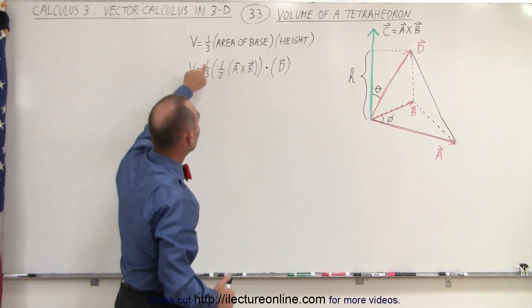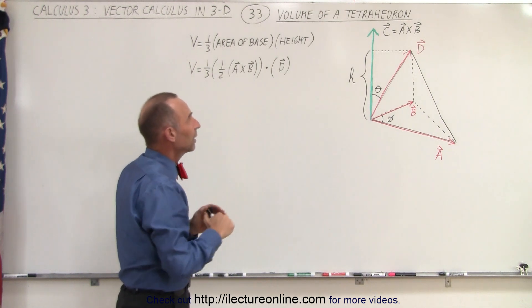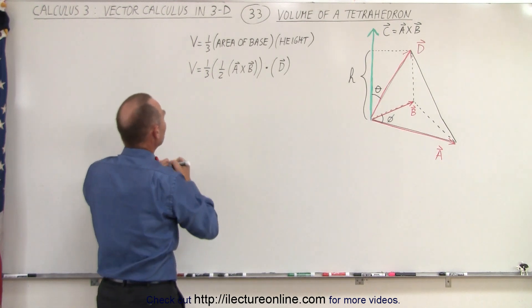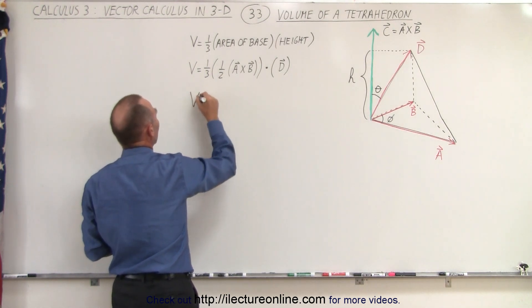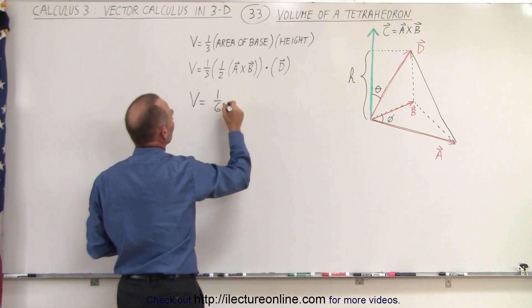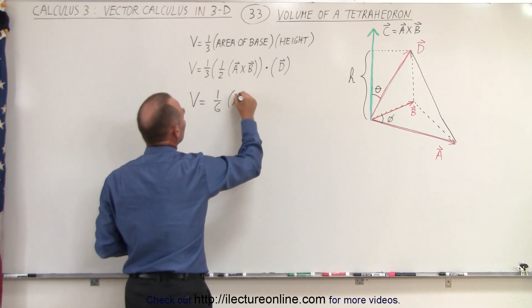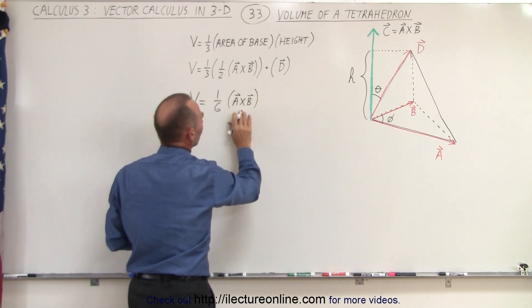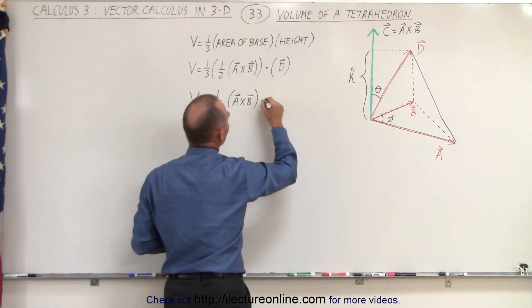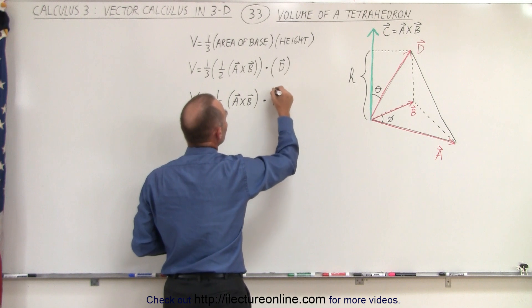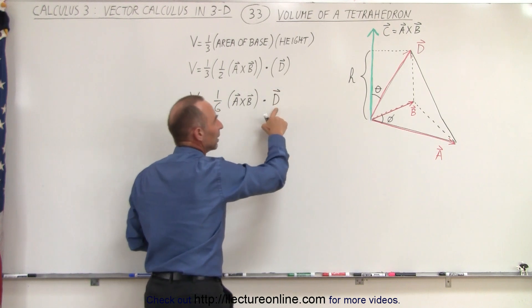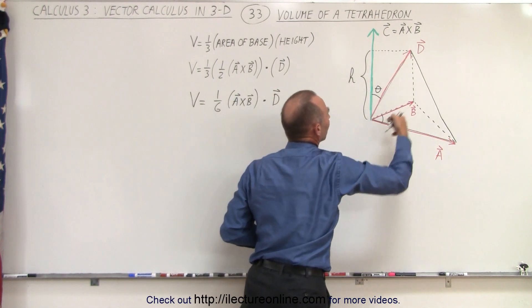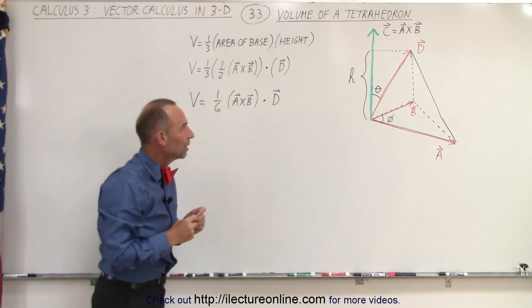Of course, we can't forget the one-third, because we are indeed dealing with a tetrahedron. So essentially, when we simplify this, we get the volume is equal to one-sixth, the cross product of the two vectors of the base, and then we dot that with a third vector, which is along one of the sides of the tetrahedron.